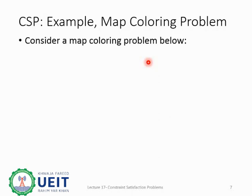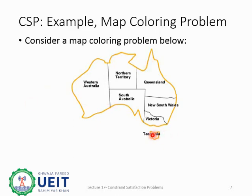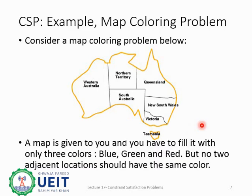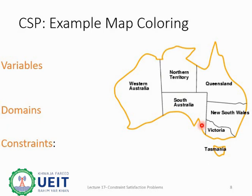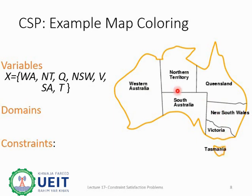Here a map coloring problem is provided and we are given only 3 colors to color this map. It is also mentioned that no two adjacent or neighboring locations can have the same color. Now let's solve this problem. The locations on the map that can store values from the domain will be our variables. So the set of variables will be: WA for Western Australia, NT for Northern Territory, Q for Queensland, NSW for New South Wales, V for Victoria, SA for South Australia, and T for Tasmania. All of these locations are placed in the variable set separated by commas.